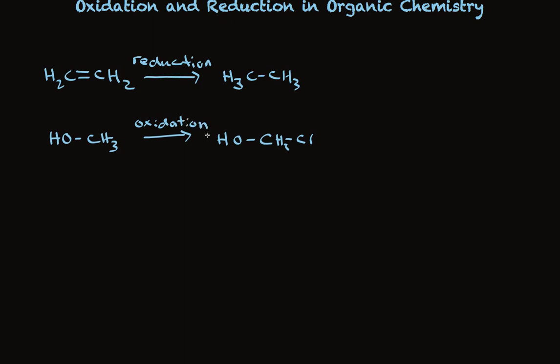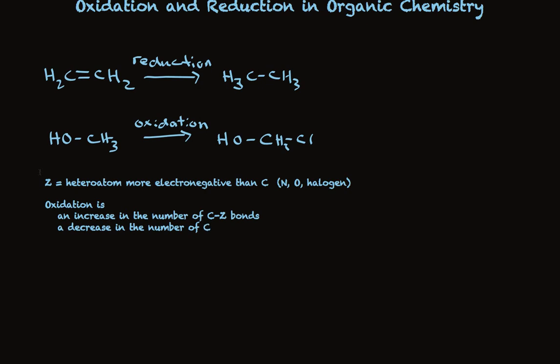Well, here it is. In organic chemistry, we use the following definitions. First, let's say that Z is equal to heteroatom more electronegative than carbon. In practice, this typically means nitrogen, oxygen, or halogen. Within that framework, oxidation is an increase in the number of C-Z bonds, or a decrease in the number of C-H bonds.